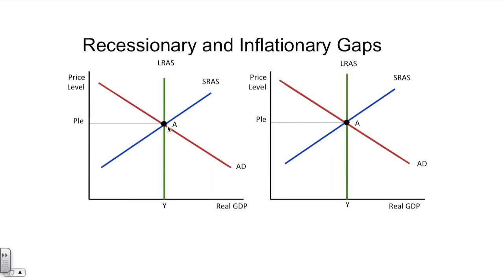Then we have a downward-sloping aggregate demand curve, which represents all of the spending done by consumers, businesses, government, and foreigners on American-made products, or whatever country you're analyzing. We also have a short-run aggregate supply curve, which represents the ability to produce and conditions that might affect the ability to produce only in a short-run period.